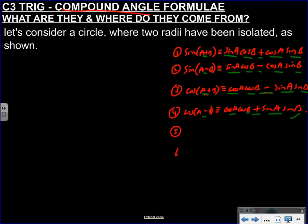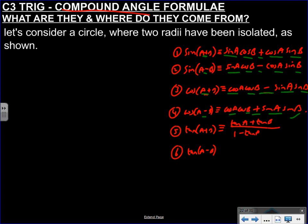Formulas 5 and 6 involve tan. So tan(A+B) is tanA plus tanB over 1 minus tanA tanB, and tan(A-B) is tanA minus tanB over 1 plus tanA tanB. In class you're going to prove these. With tan, the sign on the top is the same as what's in the bracket, and different on the bottom.